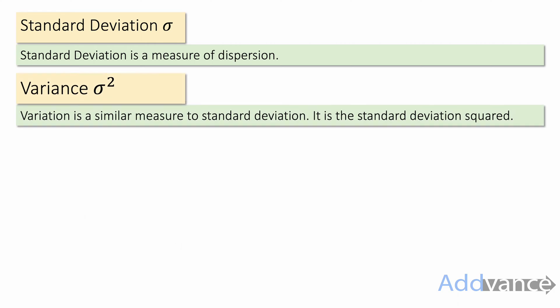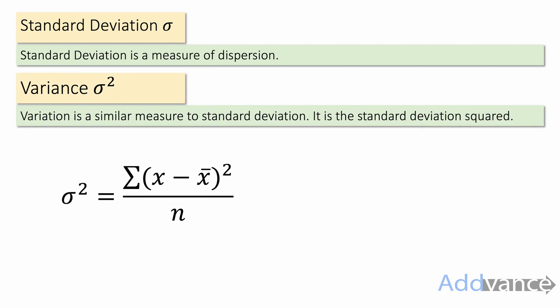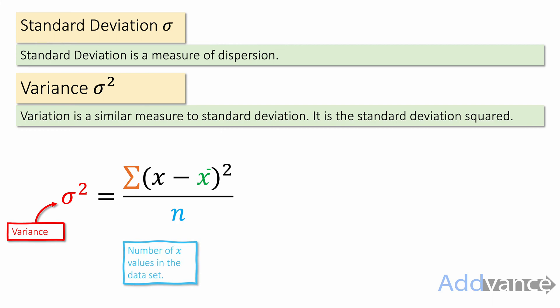We can also talk about variance. Variance is very similar to standard deviation — it's also a measure of dispersion, and the only difference is it's standard deviation squared. Variance is given by this formula here, where the symbol for variance is sigma squared.